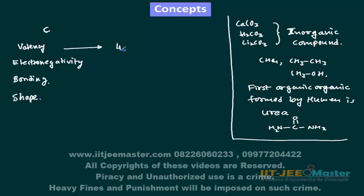The valency of carbon is 4. If we represent it in a normal plane then we represent it in a specific way — that is the method to represent it in a plane, which we will be studying. There are many ways to represent the structures of organic compounds. Here all 4 bonds are single, but somewhere we may find a double bond and somewhere even a triple bond. In all these, the bonding and hybridization is different.